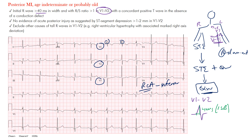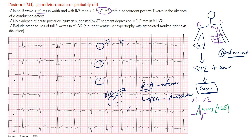The right coronary artery supplies the inferior portion of the heart, as well as sometimes the AV node and SA node. If it gives off the PDA — which it does in most patients because they're right dominant — then you have the posterior wall as well. If you occlude the RCA proximally, you'll affect all regions distal to it, which is why you'll have both the posterior and inferior portions involved. It's not uncommon to see them both.